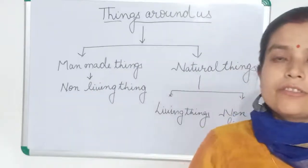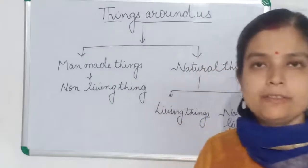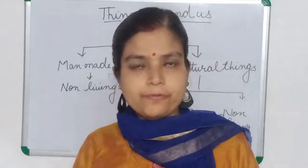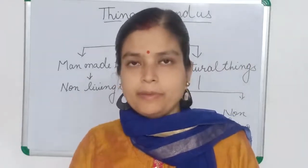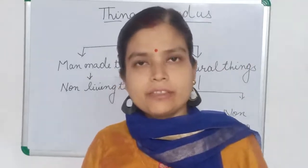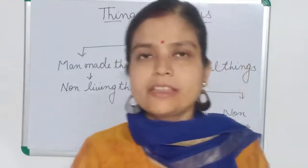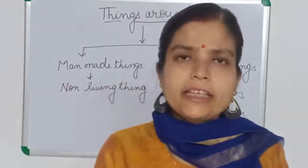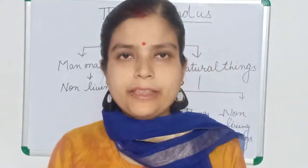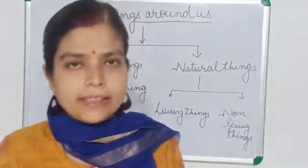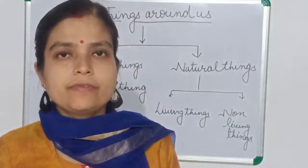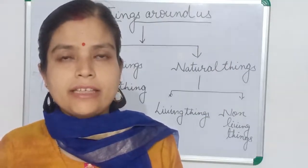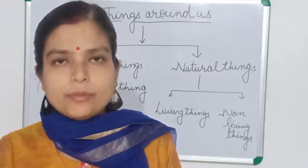Children, we need food. Different types of animals eat different types of food. We know herbivorous animals eat only plants and plant products, carnivorous animals eat the flesh of other animals, and omnivorous animals eat both. All living things take food — they take food to survive, to grow, to get energy, and to stay healthy.